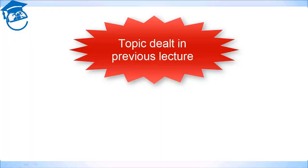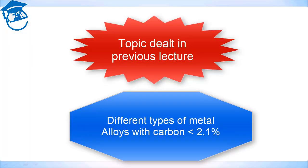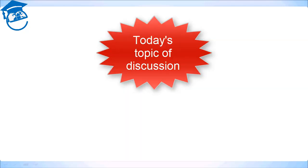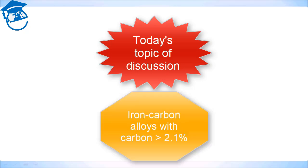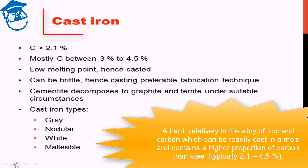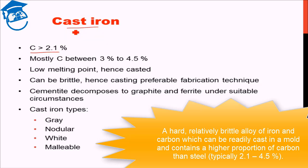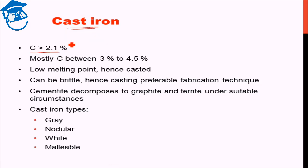In the previous lecture we discussed the different alloying elements with carbon amount less than 2.1 percent, that is the different kinds of steel. Today we will discuss iron-carbon alloys with carbon greater than 2.1 percent — those kinds of alloys which have carbon greater than 2.1 percent are known as cast iron, but mainly carbon is between 3 and 4.5 percent.